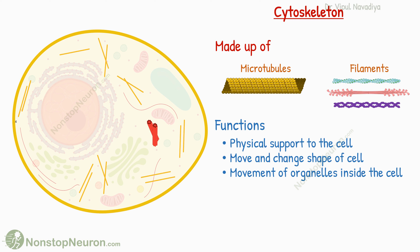So this was all about the cytoskeleton. In summary: the cytoskeleton is a network of fibrillar proteins including microtubules and filaments. It provides physical support to the cell, helps cells move and change shape — for example, through amoeboid movement, contraction, cell division, and movement of cilia and flagella — and it acts like a conveyor belt to move organelles inside the cell.